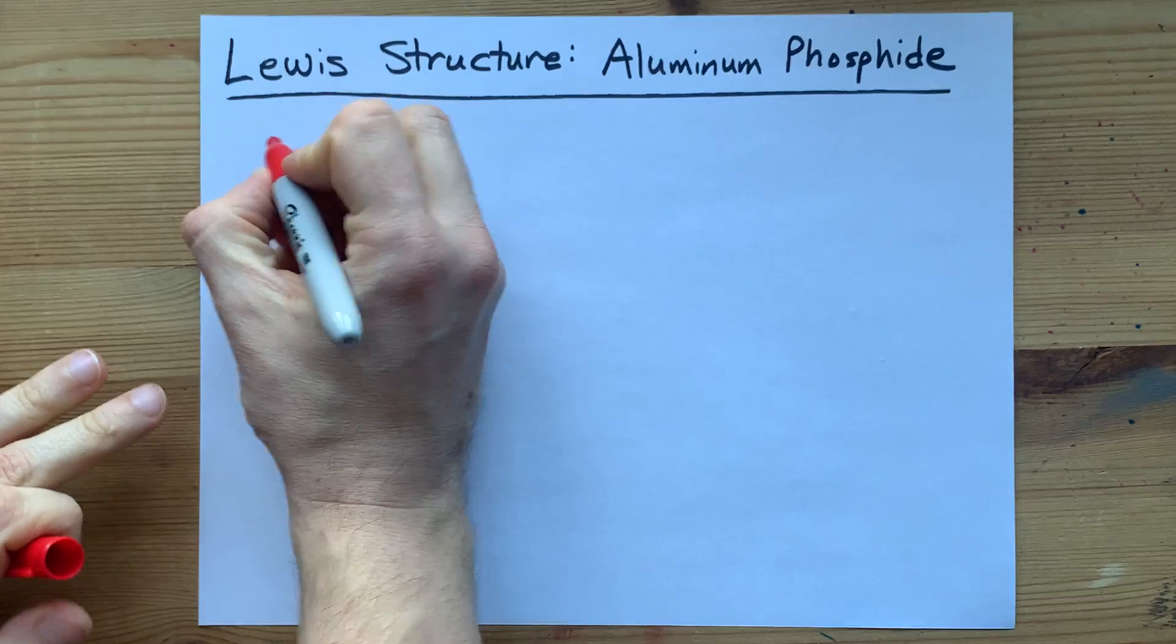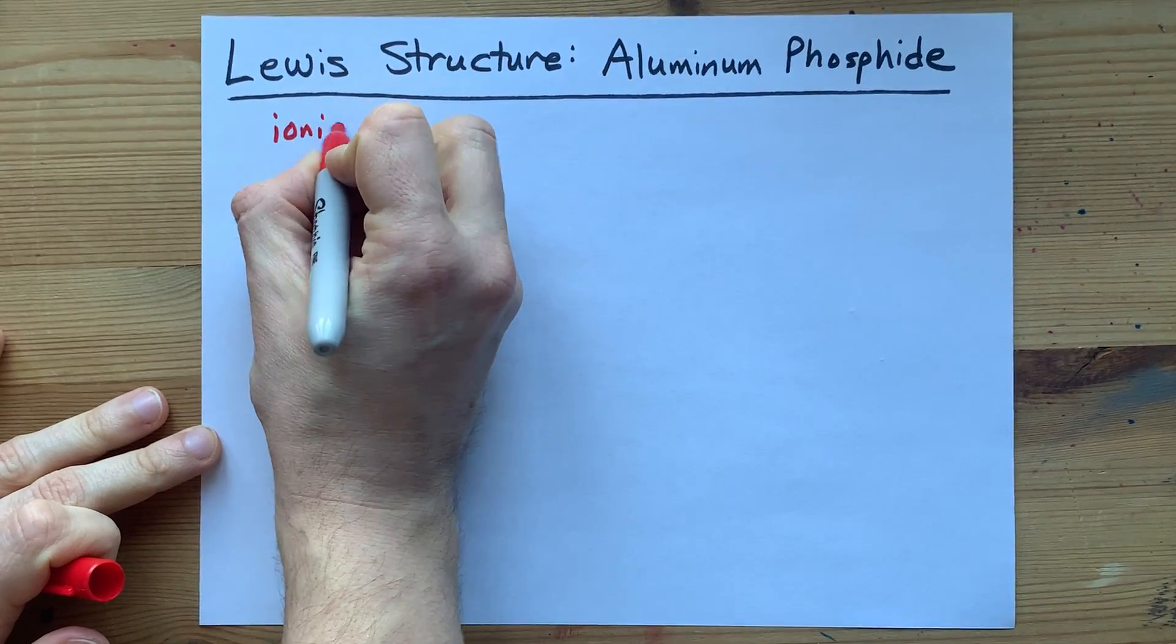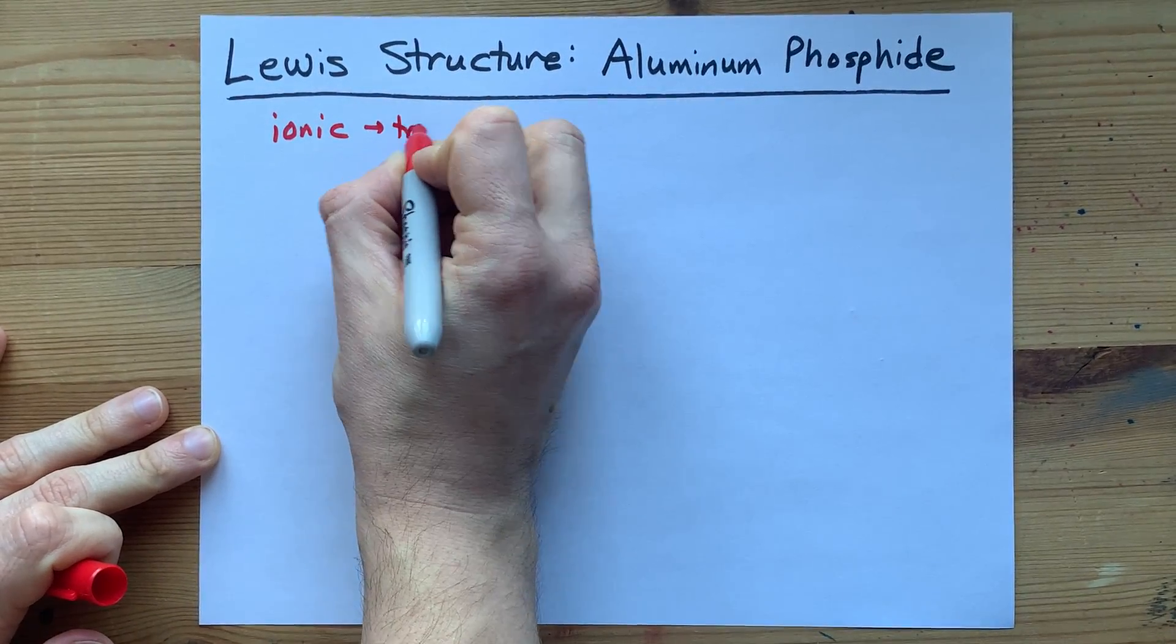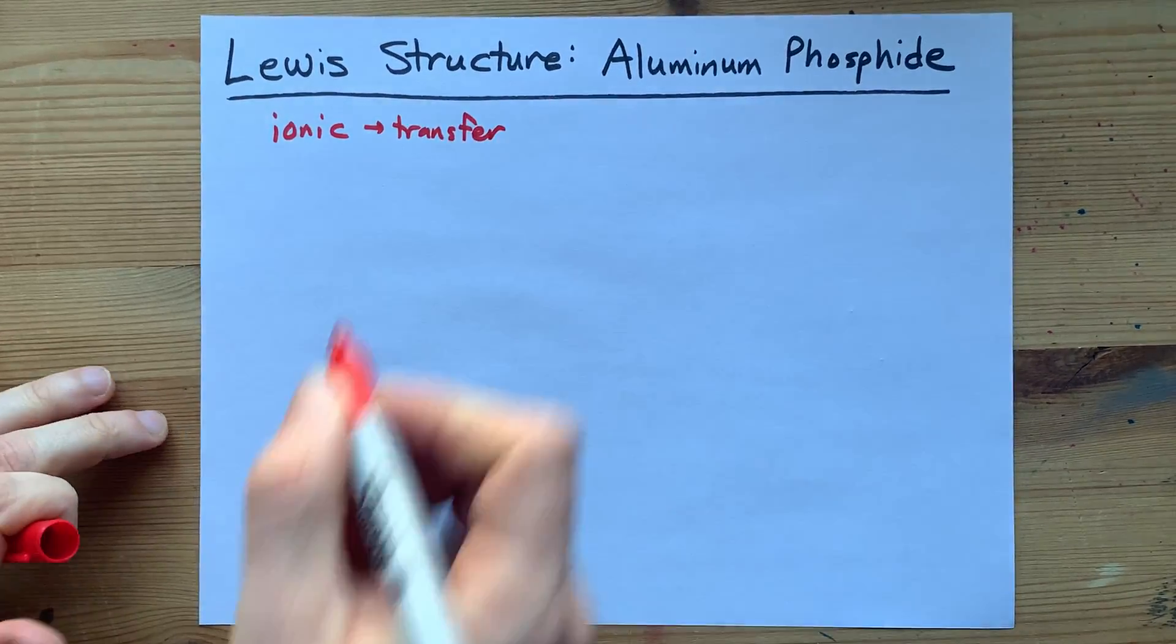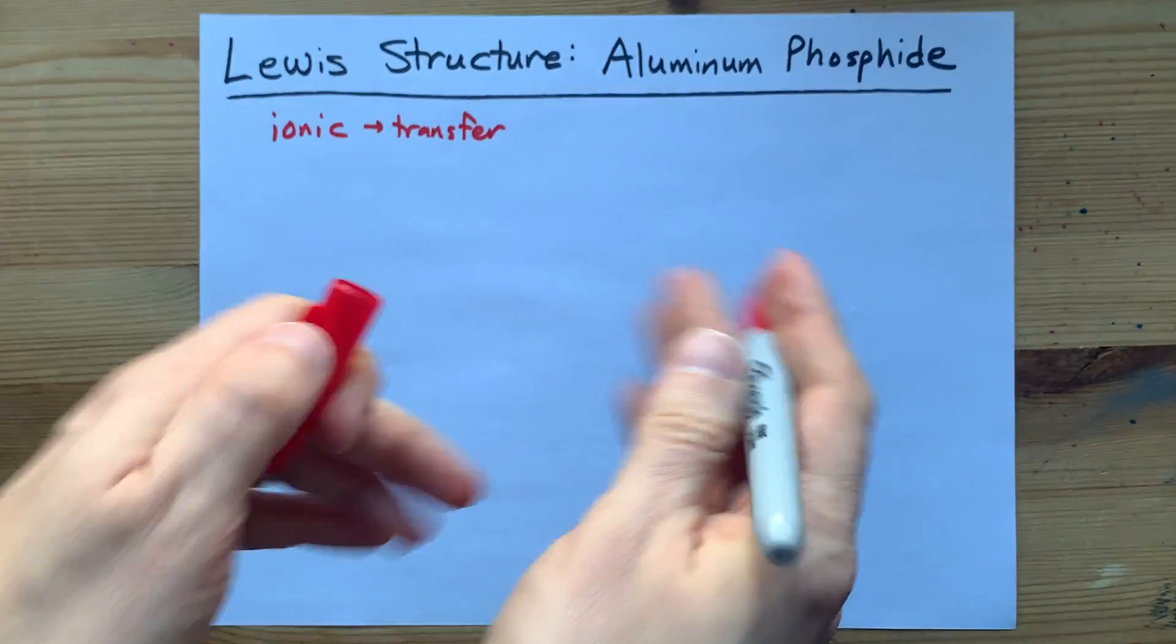When a metal and a non-metal bond together, you get ionic bonds, which are caused by a transfer of electrons from metal to non-metal.